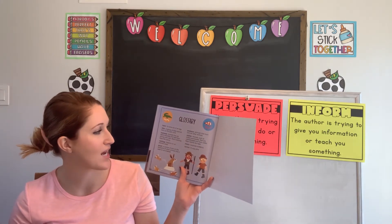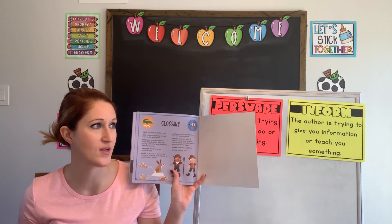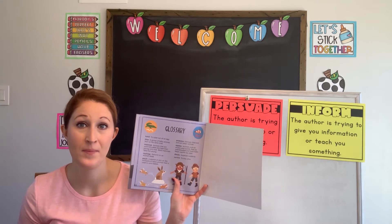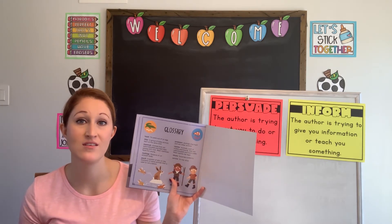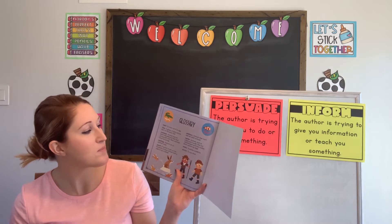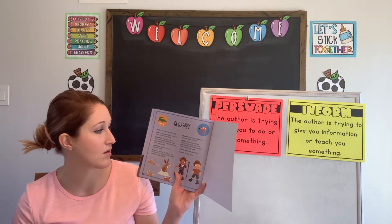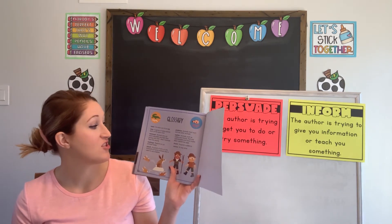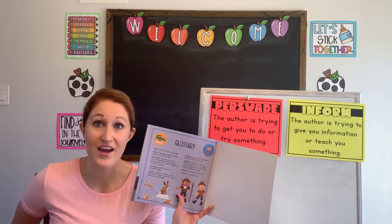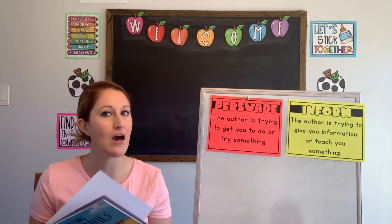Next up we have the word predators — those are animals that hunt and eat other animals. What are some predators you can think of? Yes, lions, bears, sharks — those are all really good predators. Reptiles are animals such as snakes and lizards that are cold-blooded and have scales. Most reptiles lay eggs. Startle means to be suddenly surprised. And survive means to stay alive. As we're reading, we'll see if we come across any of those words.